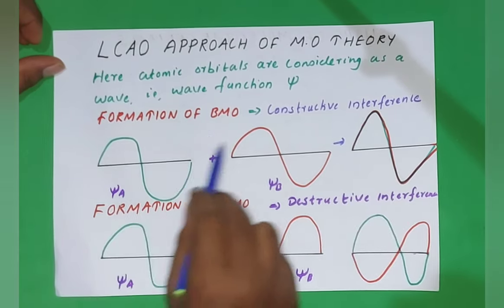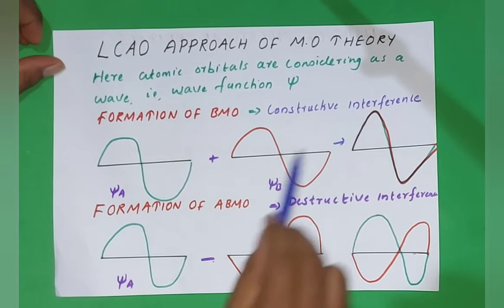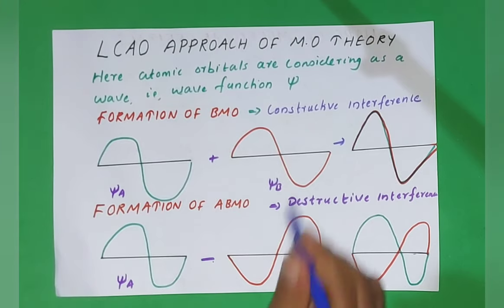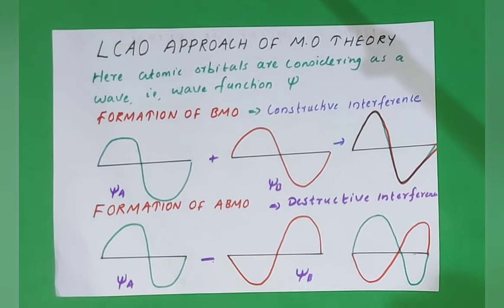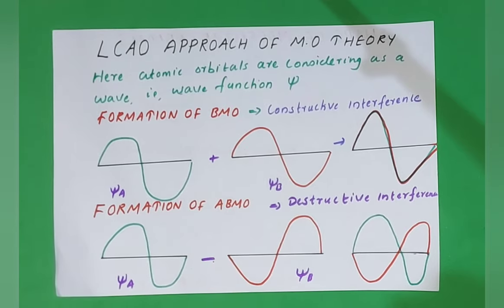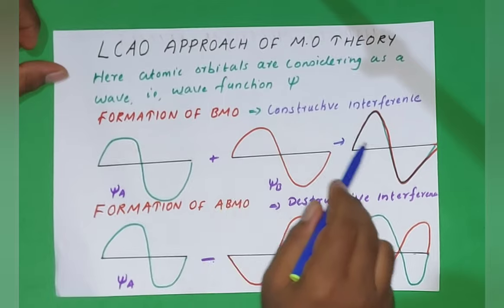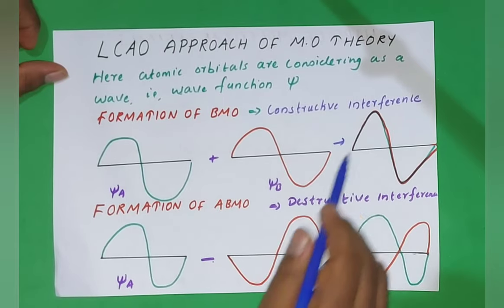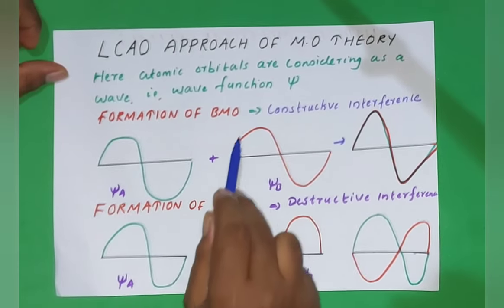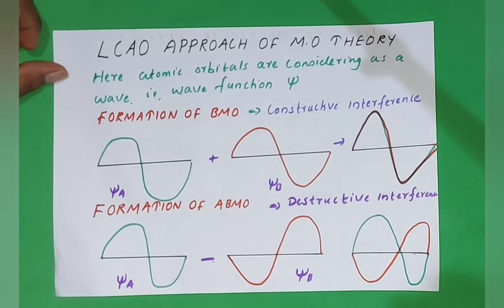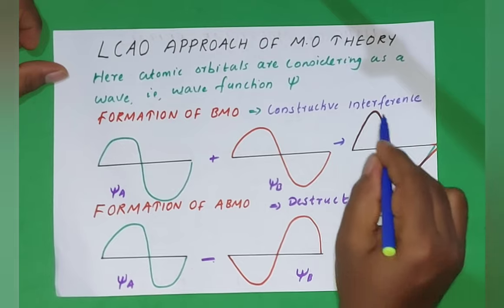The formation of BMO means constructive interference — these two waves are going to interfere constructively. In constructive interference, the amplitude is increasing; it is an addition. The same-side crest and crest overlap, trough and trough overlap, so probability is increasing. This is the representation of a BMO.